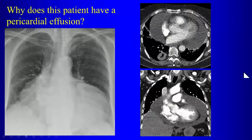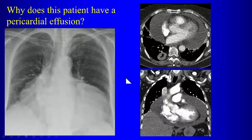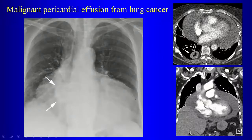This patient has a pericardial effusion because of malignancy. There's a cavitary lung mass — unlike TB, which typically produces cavitary lesions in the upper lungs, this lesion suggests cancer. This is a patient with lung cancer causing a pericardial effusion from metastatic disease.